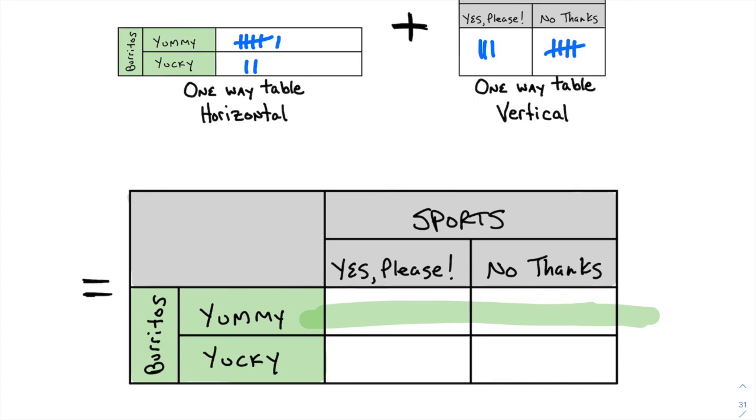And the person says no. Then, boom, that's where your tally mark goes. That's all there is to a two-way frequency table.